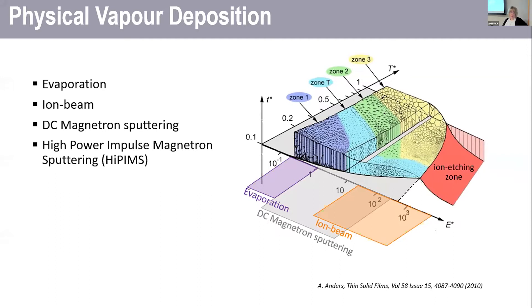And HiPIMS is essentially a special case of DC magnetron sputtering. It's the same technology, just using a special power supply. And the great thing about that is that you're able to access, theoretically, that entire energy region.